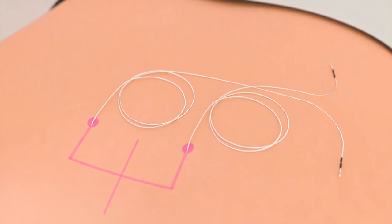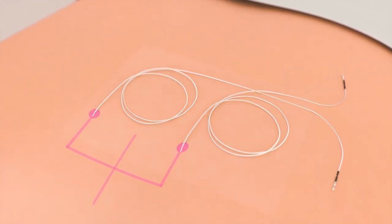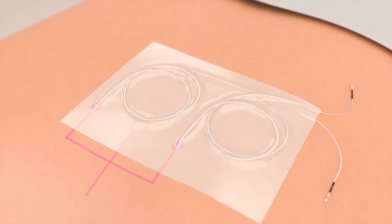Each PNE lead is coiled above its respective insertion site and covered with gauze and a small tegaderm, leaving enough excess for the basic trial cable connection.